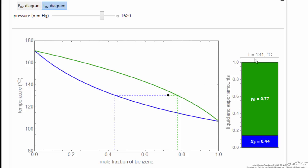And again, the bar graph shows the relative amounts of liquid and vapor. So hopefully by using these interactive simulations, you can get a better physical understanding of binary vapor-liquid equilibrium for an ideal solution.